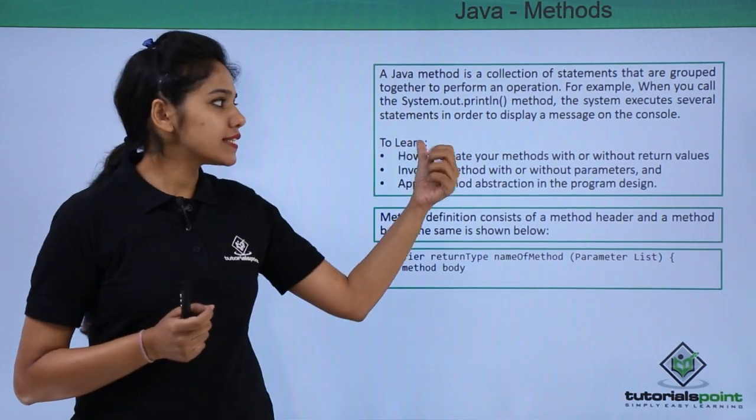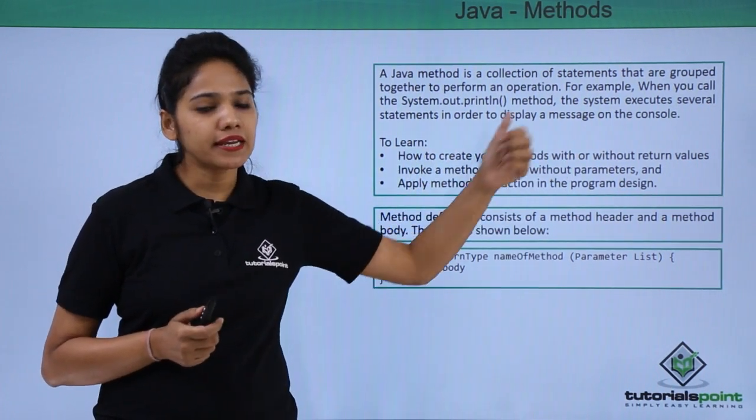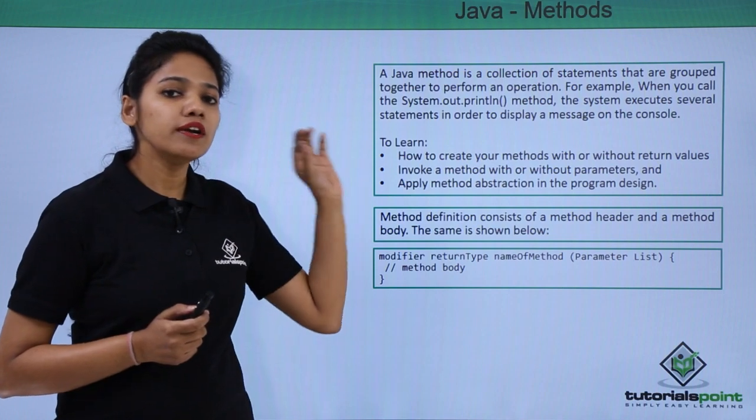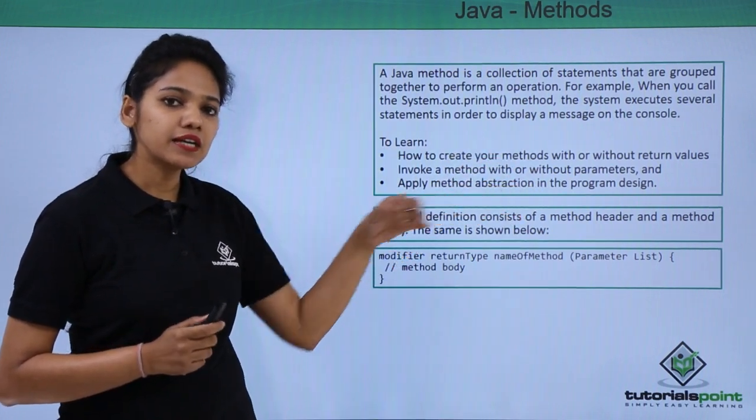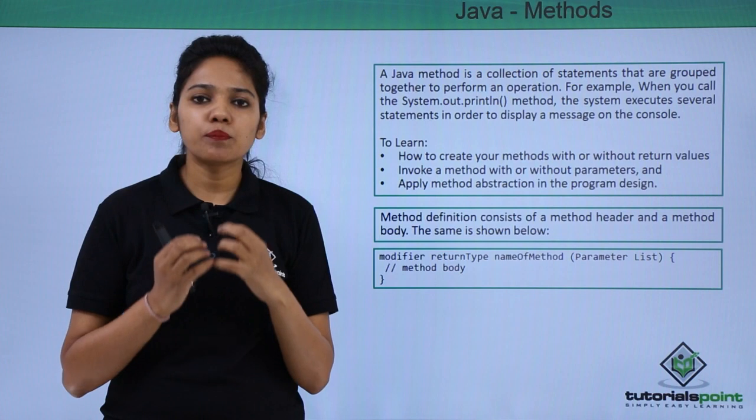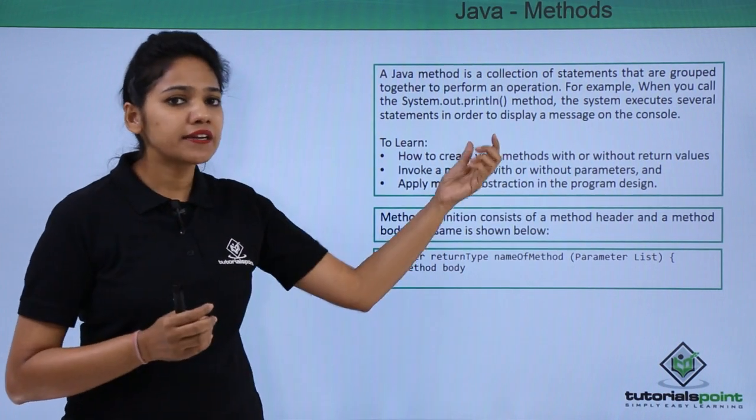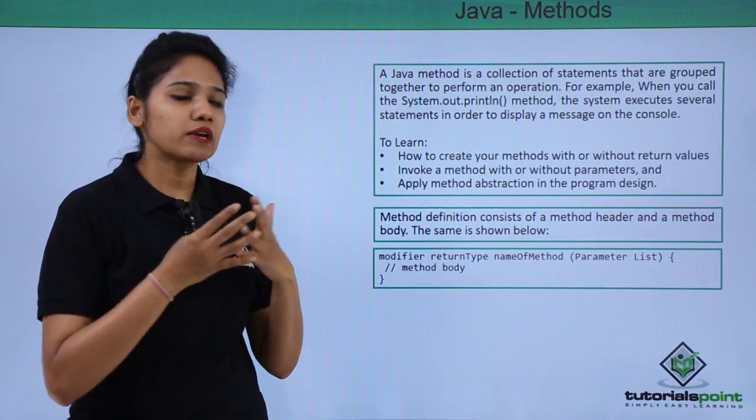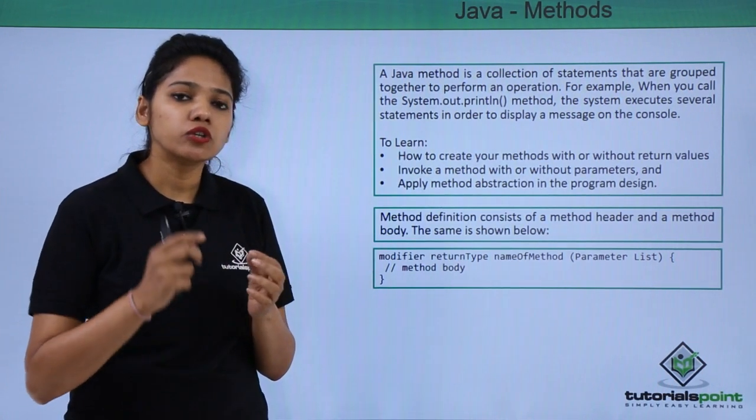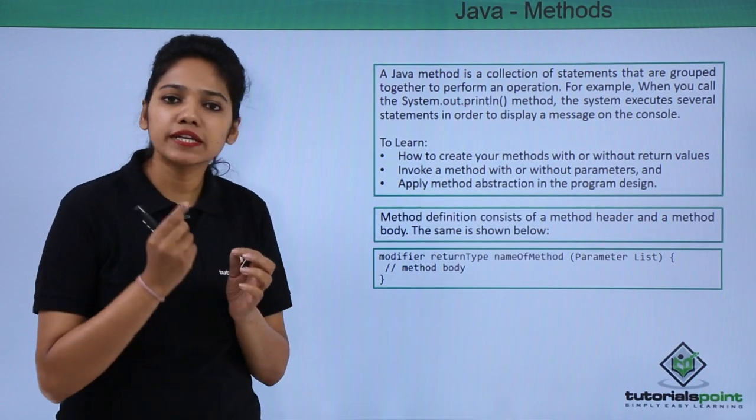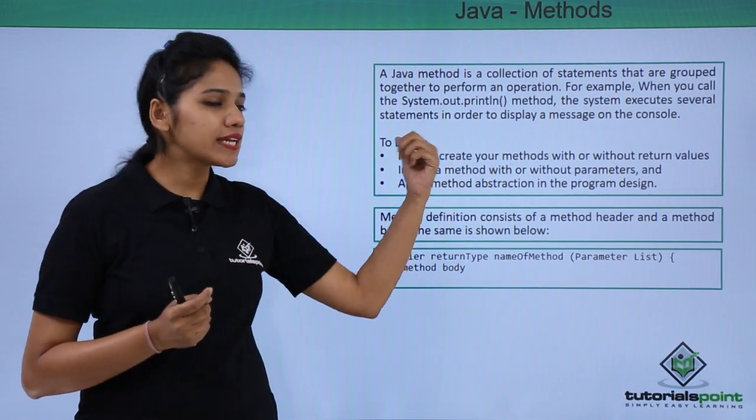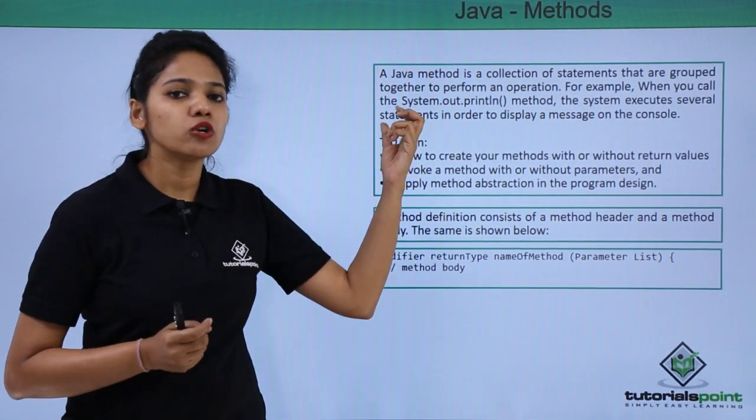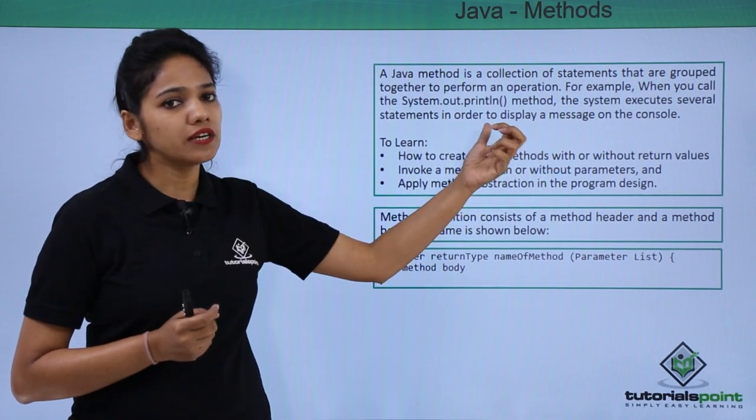We can take an example of system.out.println where println is one of the methods provided by our IO print stream. So what this particular method does is that it prints the output. Here it does not have any block of statements to execute. So a behavior is not only that you provide what is to be executed. You need to understand what kind of an output it is trying to provide. So when you execute a println statement, this will execute n number of statements in the backend to provide or display this particular output.